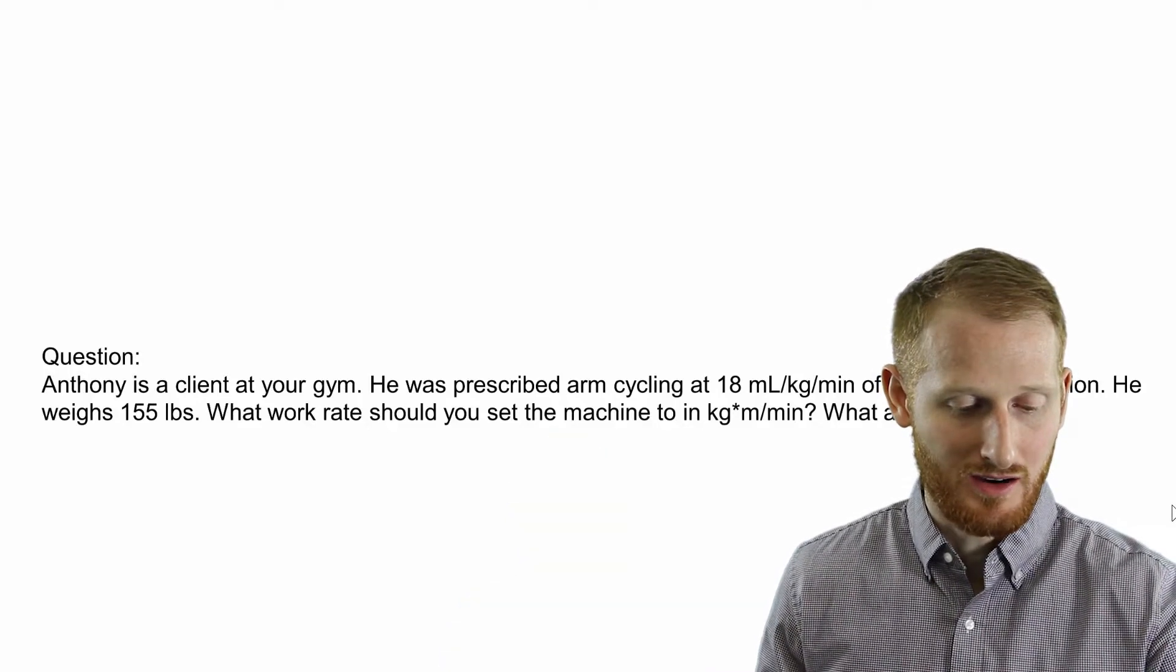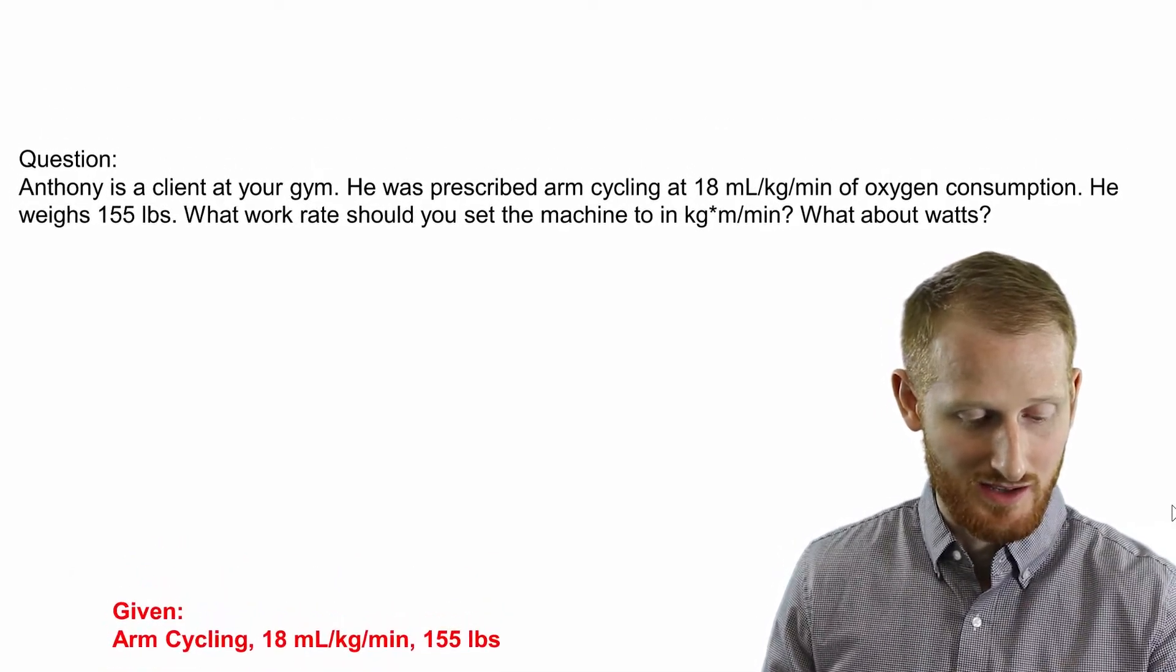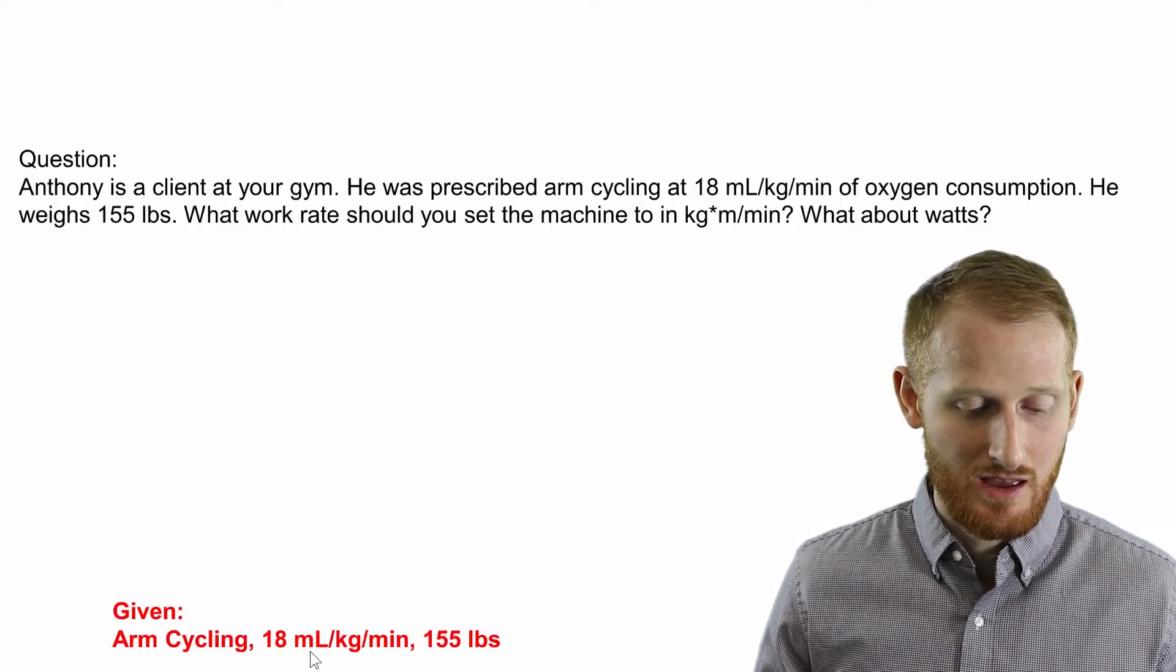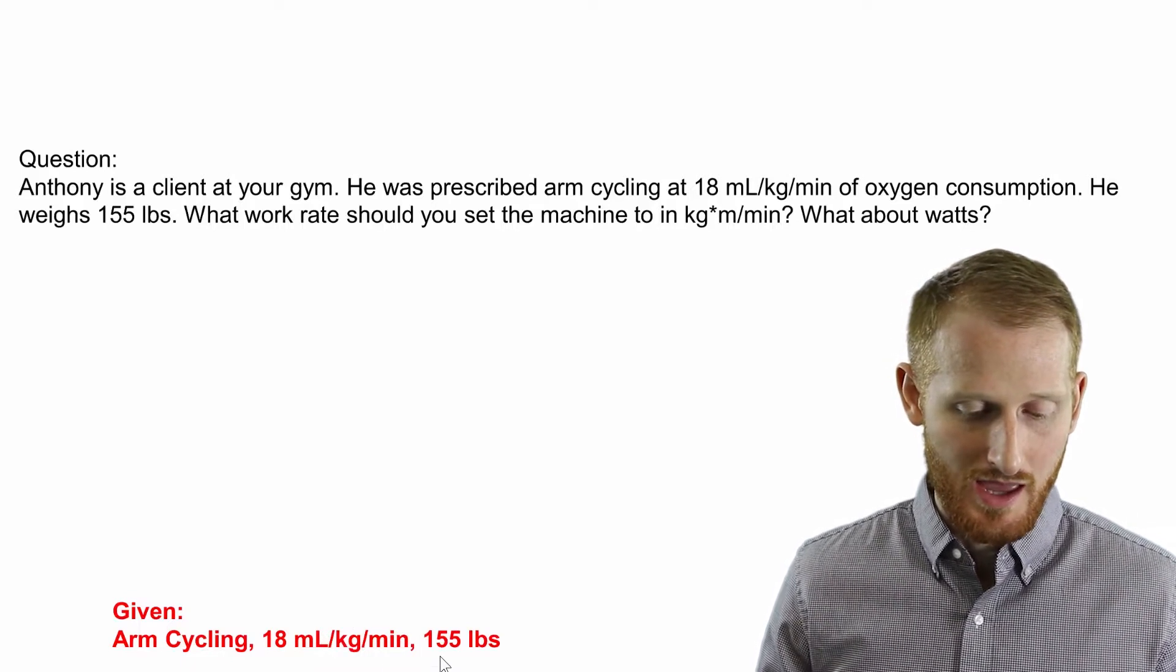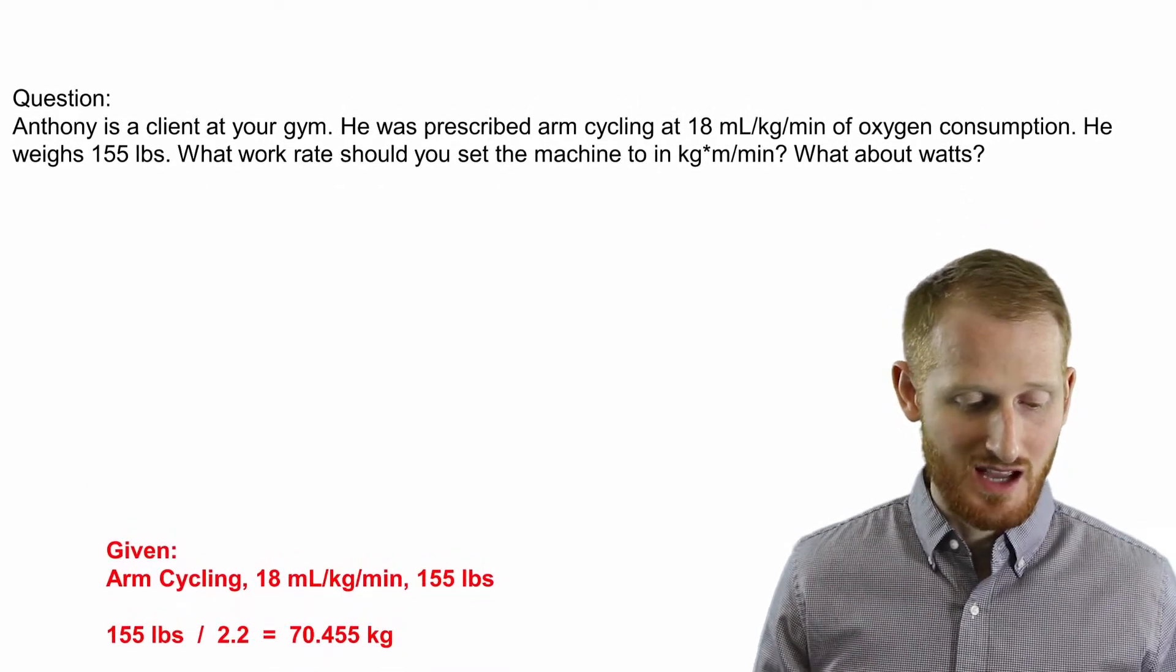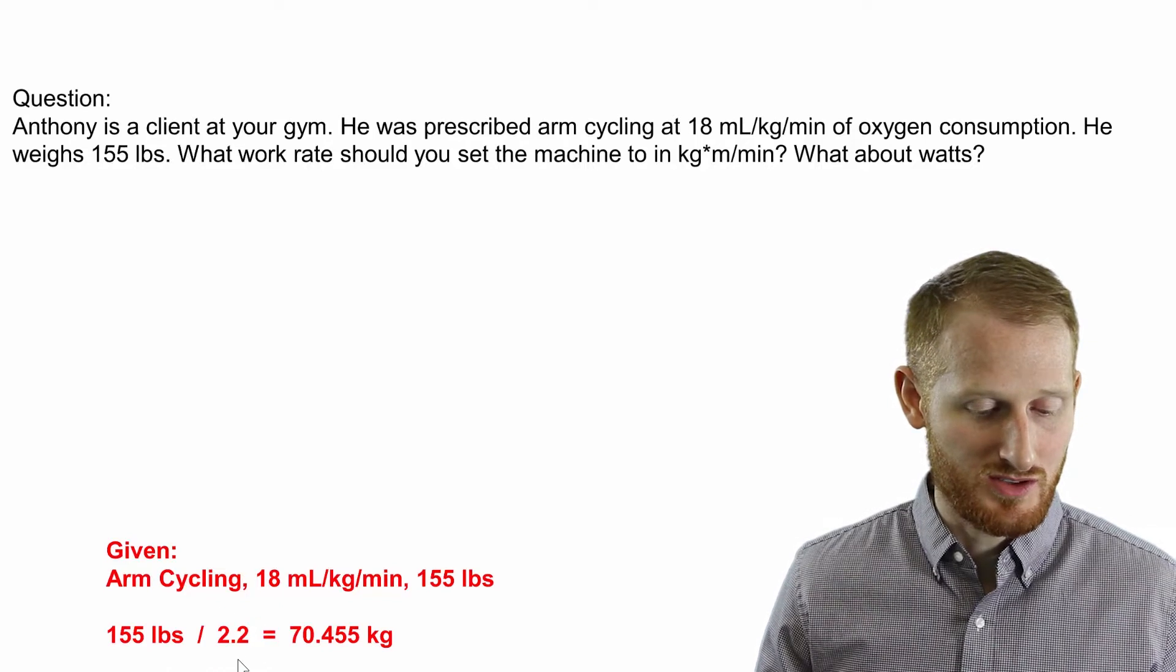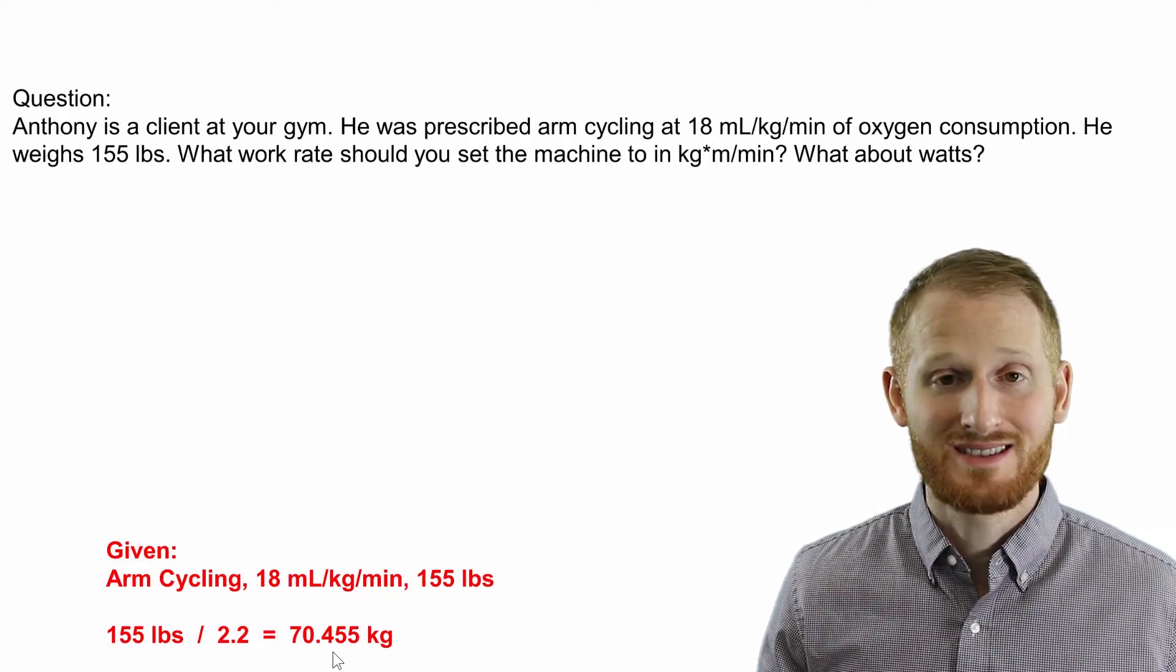So let's go ahead and look at our given variables here. We have arm cycling as our exercise modality. That's important so we can know which ACSM equation to use. He is going to be working at 18 milliliters of oxygen per kilogram body mass per minute, so 18 is his relative VO2, and he weighs 155 pounds. So first thing I'm going to do here is I'm going to convert his body mass from pounds to kilograms. So I'm going to take his 155 pounds, divide that by the conversion factor of 2.2, and get 70.455 for his body mass in kilograms.